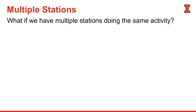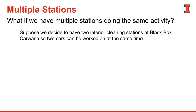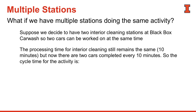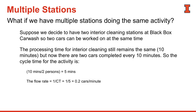What if we have more than one station doing the same activity? In our car wash, the drying station took 10 minutes. If we decide to have two drying stations, since two people work on two cars simultaneously, we could have two cars coming out at the end of 10 minutes. Our flow rate doubles — instead of six cars, we get 12 cars from this station. The cycle time becomes five minutes, and the flow rate is one over five, or 0.2 cars per minute.